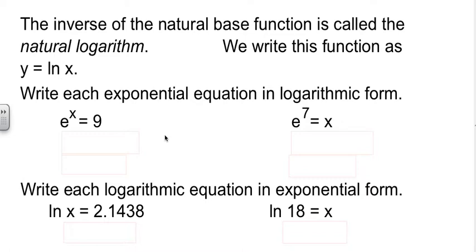Now, one of the things they're going to ask us to do is flip-flop equations again. Since we have e^x = 9, we know how to flip-flop that. The base stays the base. It was an e base, so it becomes a log base e. And the x and the 9 trade jobs, so the x goes away from the e. Well, log base e is a natural log, so we would write it ln(9).